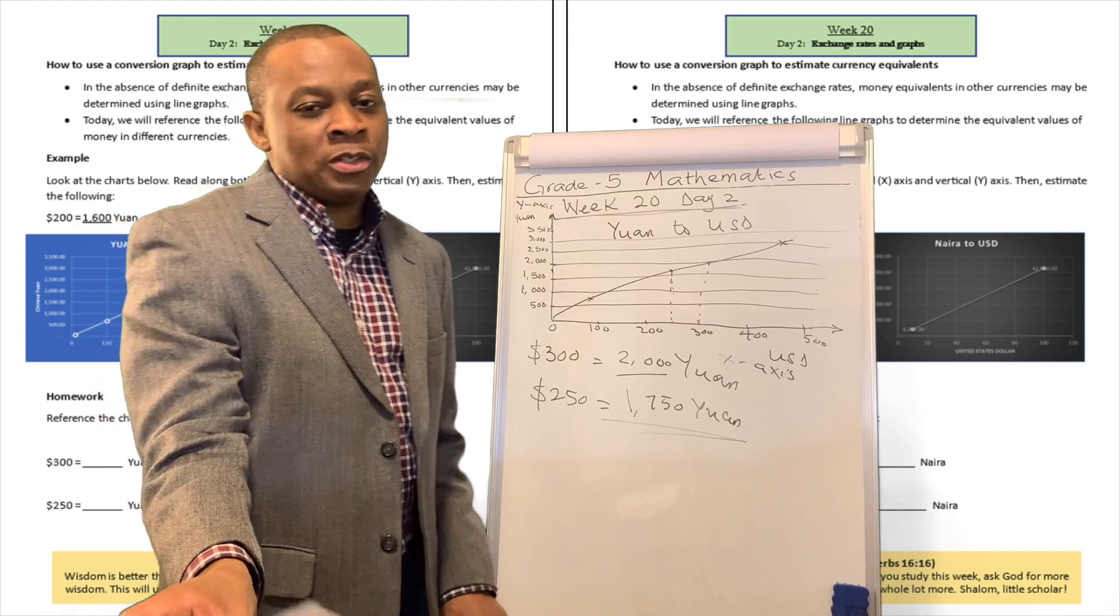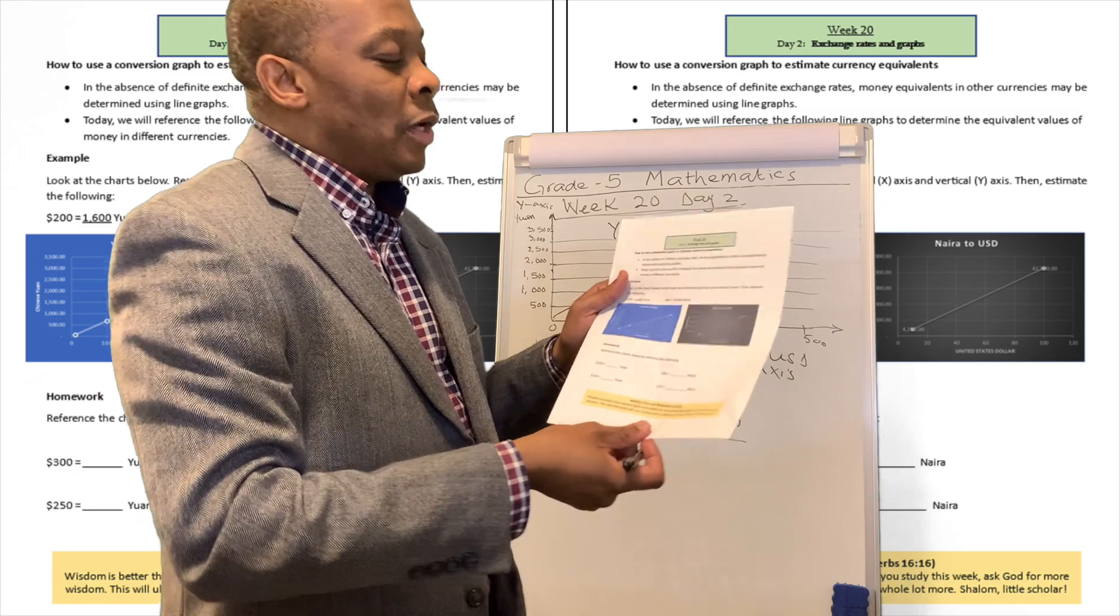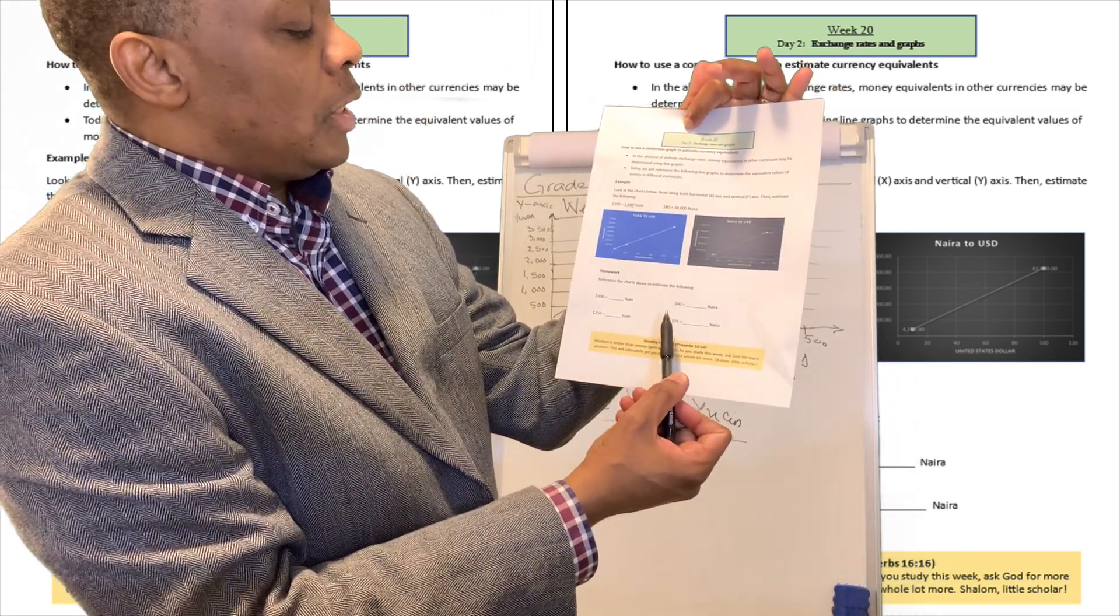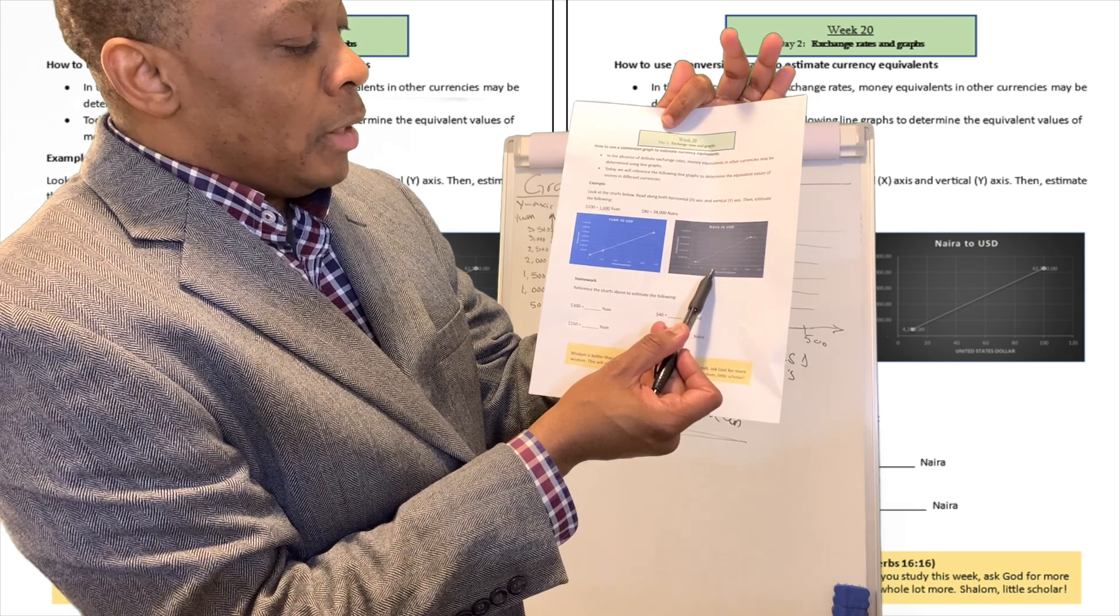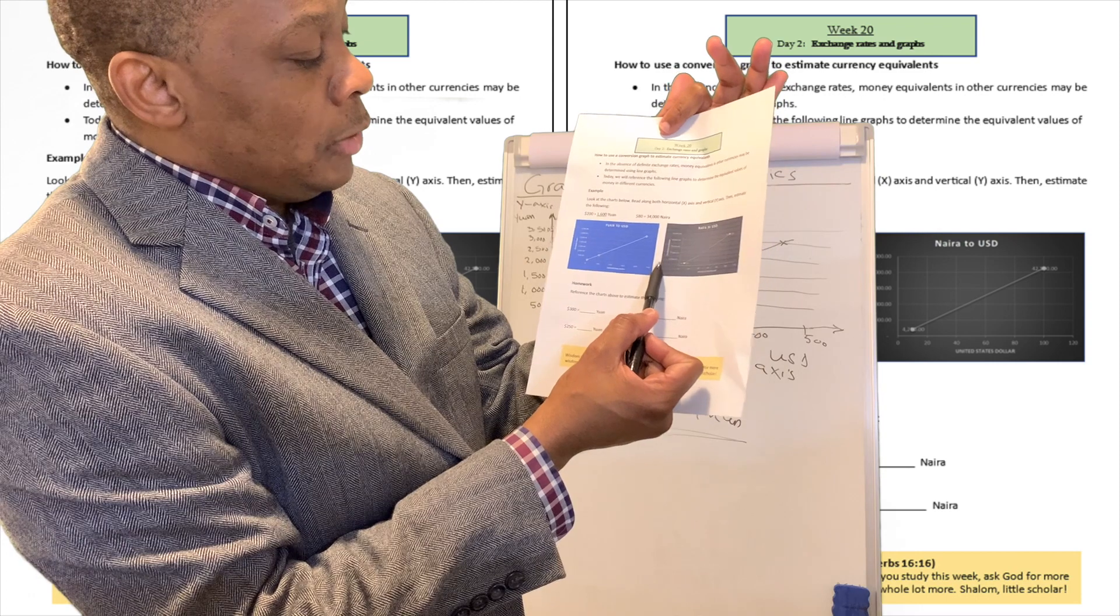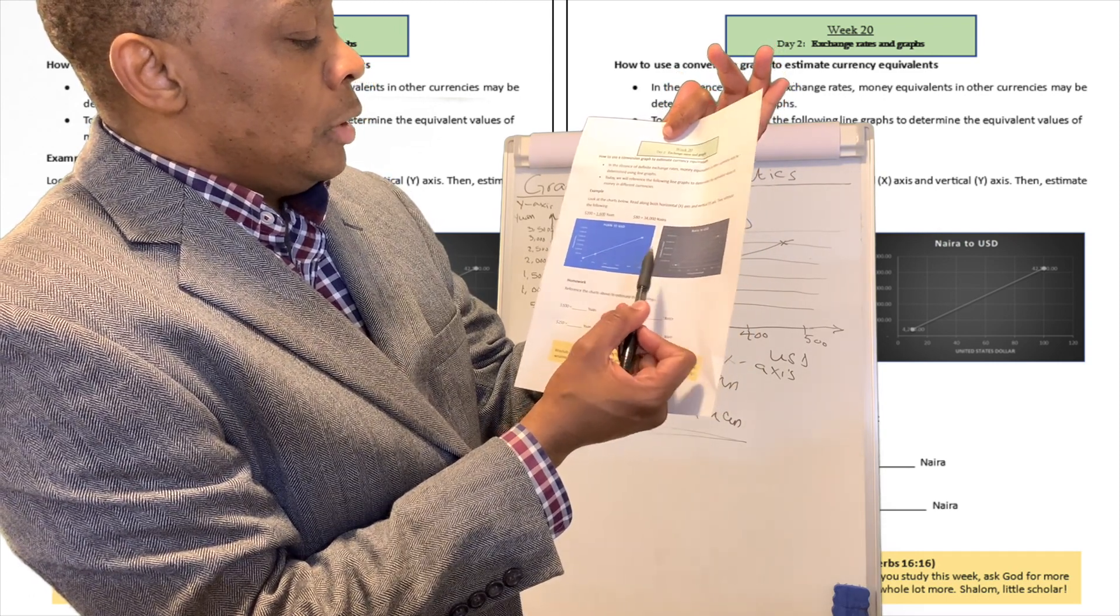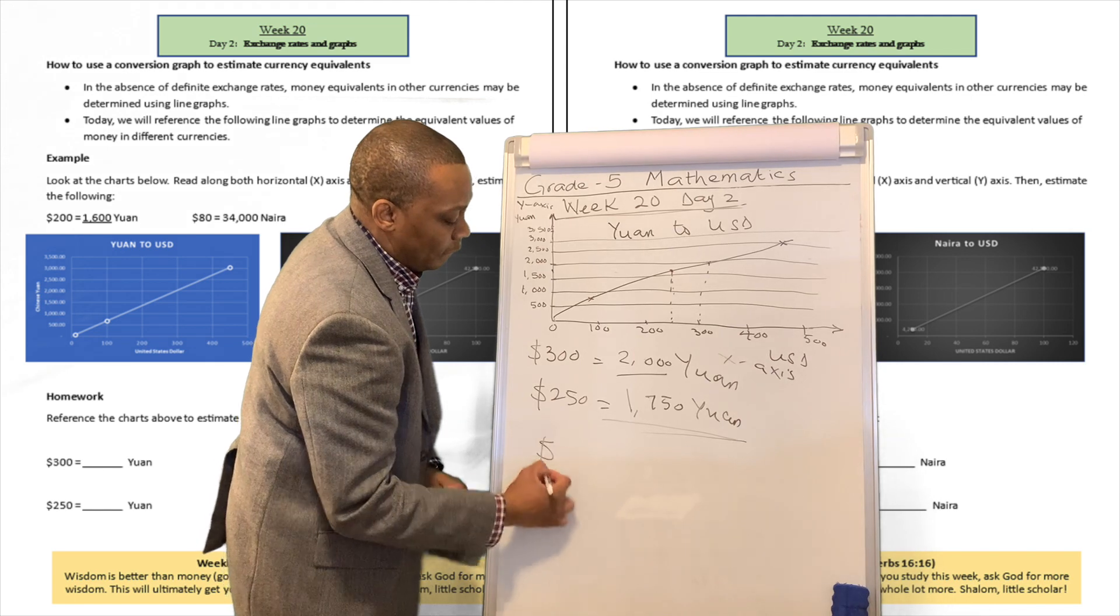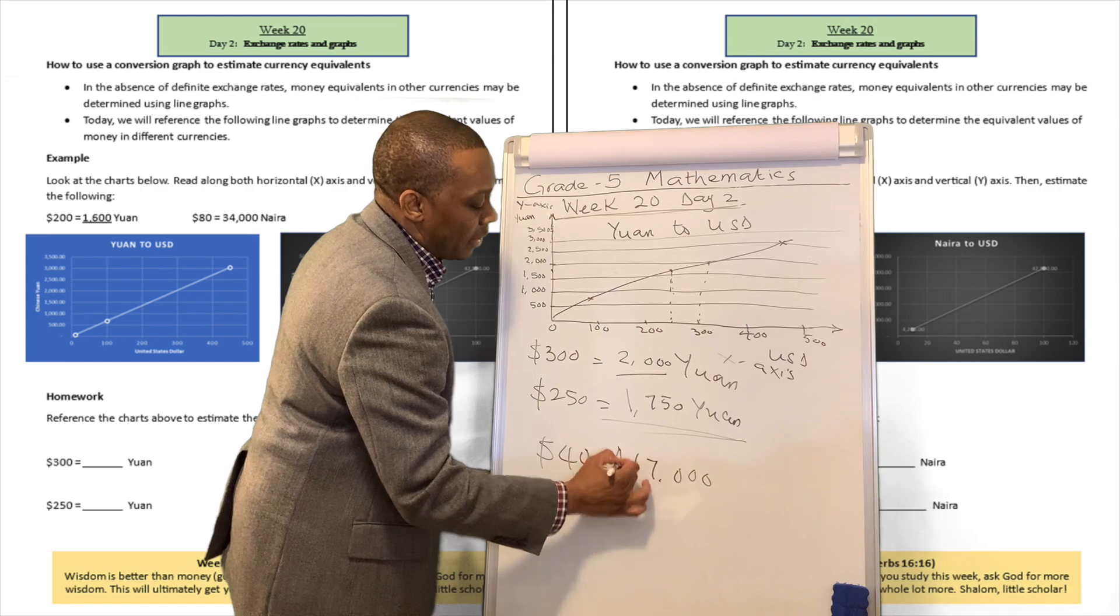Let's try to do another one. If you turn to page number 154 of your workbook, there's going to be another chart talking about the Nigerian Naira to the United States dollars. They're going to tell us what is $40 in terms of Naira. Well, $40 is going to be right over here, and then you trace to the line chart and bring it over here. It's going to be approximately equivalent to $17,000. In terms of Naira, $40 is going to be equivalent to 17,000 Naira.